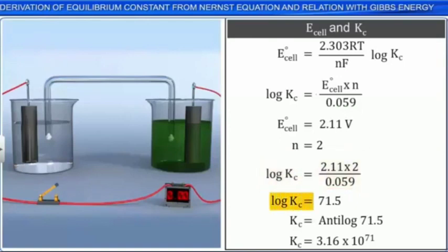To find Kc, you can take the inverse log or the exponential function of both the sides. This gives us a value of 3.16 into 10 to the power 71 for Kc, an extremely large number.